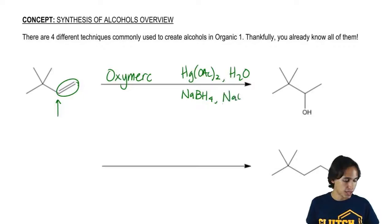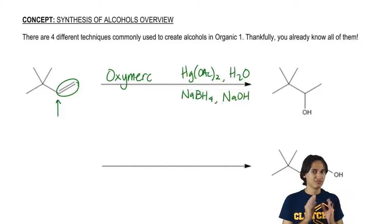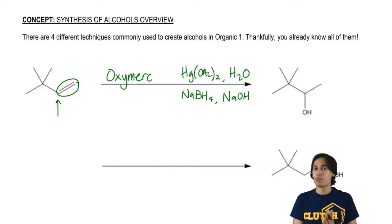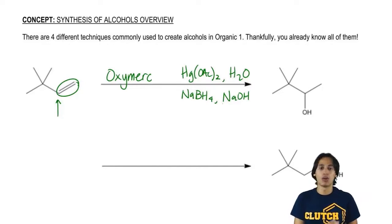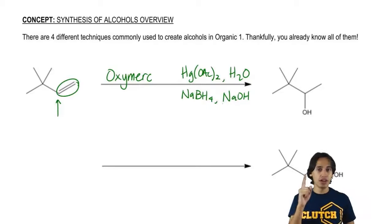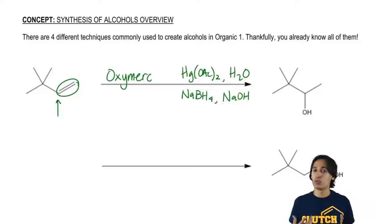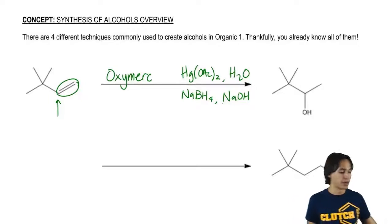And a base, NaOH. Those are the reagents — I know it looks like a lot, but we have been over this before. This is one of the ways that you can add alcohol to a double bond. We've covered one of the four ways, but let's keep going because it turns out there's a lot more that we can do to a double bond.